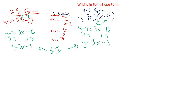That's the slope-intercept form we were finding last time, and that's a lot of times where we like our final answer. That's one of the reasons why we do it this way, as opposed to plugging in the point and solving for b and then plugging b back into the equation — it's just two steps. I know when I was in high school I always just found b and plugged it in, and didn't realize this was easier until college. So I'm telling you it's actually easier to do it this way.